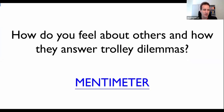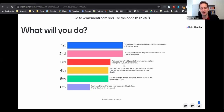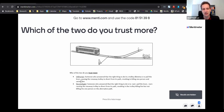A nice twist that some psychologists I know add to the trolley dilemmas — and I thought it was really clever — is asking: how do you feel about others in the way they answer these trolley dilemmas? The question on Mentimeter is: which of the two would you trust more? The utilitarian answered that the right thing is to pull the lever. The deontologist answered that the right thing is to not pull the lever and let the trolley do its thing.